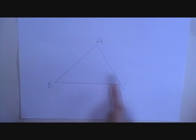This is the triangle ABC. I am going to construct the circumcentre and then the circumcircle of this triangle.